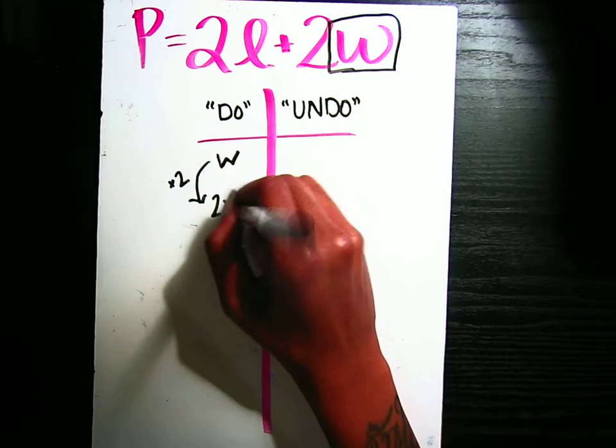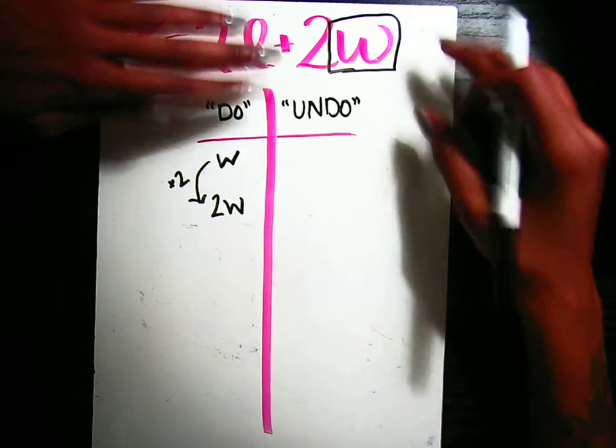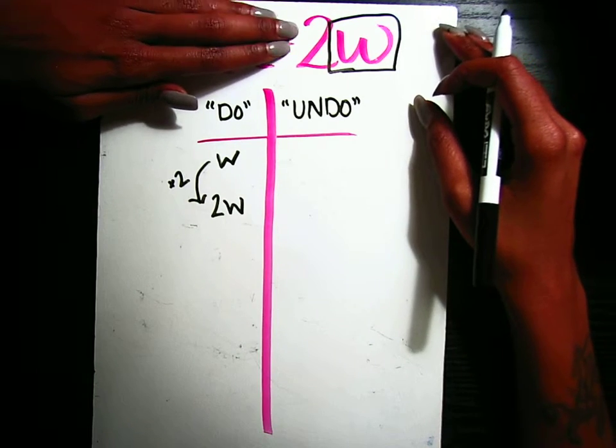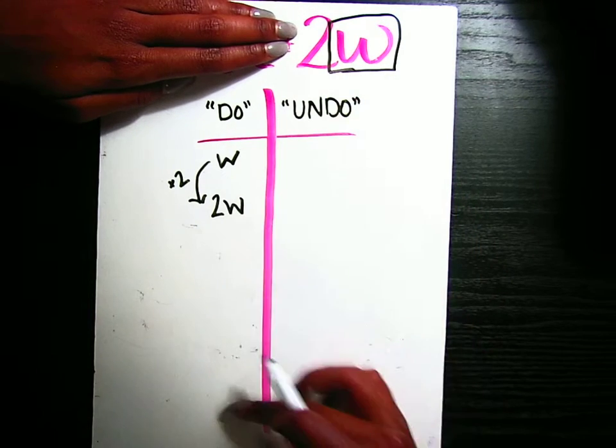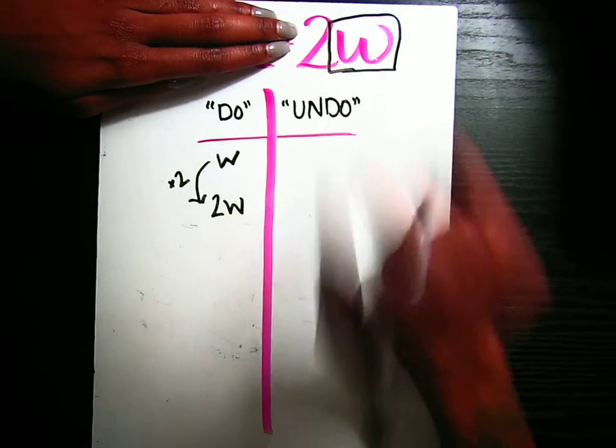2 times W gave me 2W. So that's how I got that much of my equation. That's what the do side is doing. We're trying to set up the actual equation. So far I have 2W.